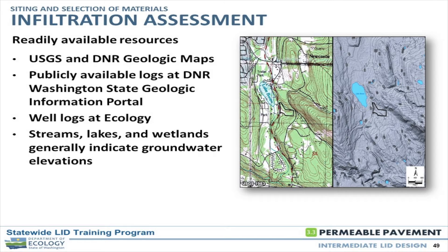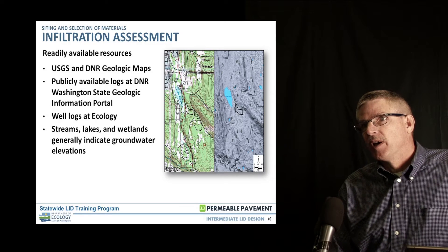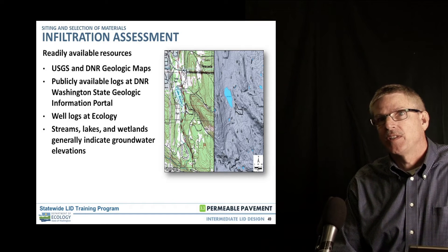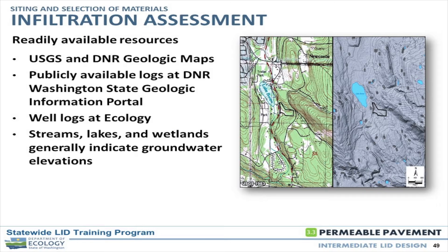On a grander scale, there are sources we can access online. The USGS and the DNR put together a great collection of maps online. The statewide DNR program has integrated a lot of boring information from the City of Seattle and the UW, putting together a great collection of borings from geotechnical reports all over the Puget Sound. Well logs from Ecology are another great source, although you've got a wide range of different descriptions since various well drillers and geologists log the holes — but it's still a good indication.